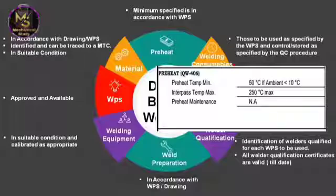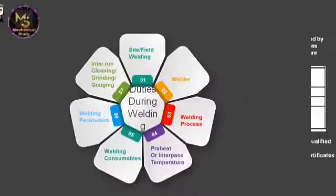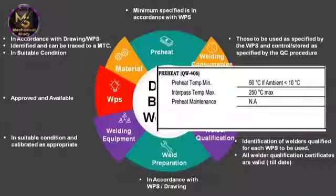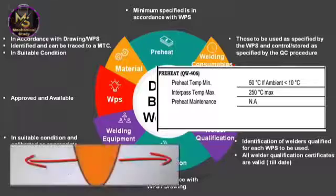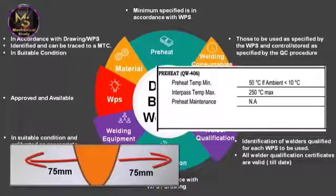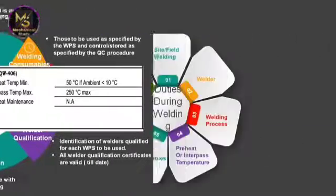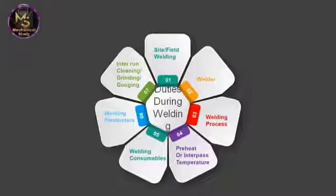Preheat temperature shall be checked using temperature-indicating crayons, thermocouples, pyrometers, or other suitable means to ensure the temperature specified in the WPS is obtained prior to and maintained during welding. The preheat zone shall be at or above the specified minimum temperature in all directions from the point of welding for a distance of 75 mm.